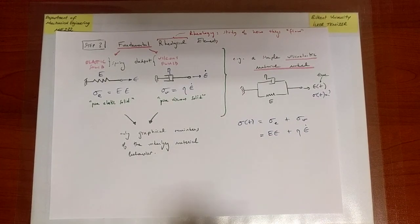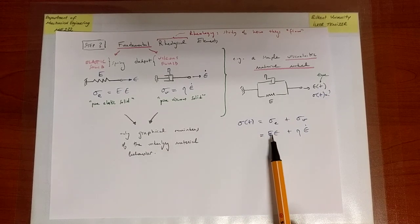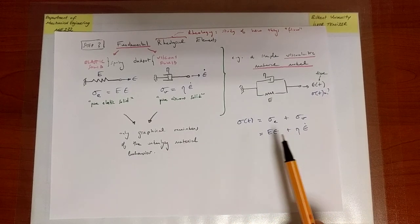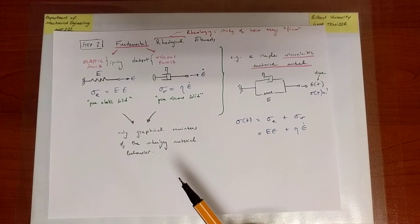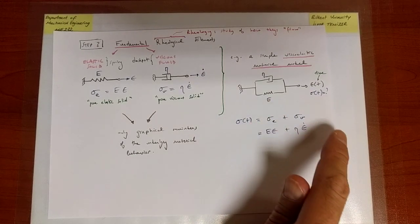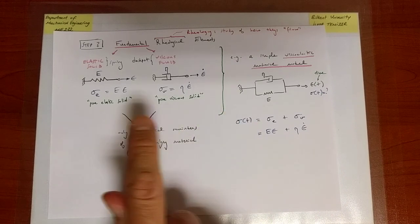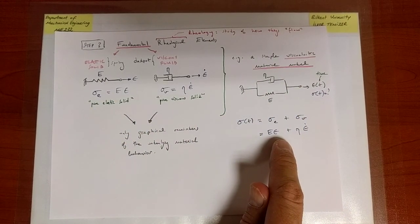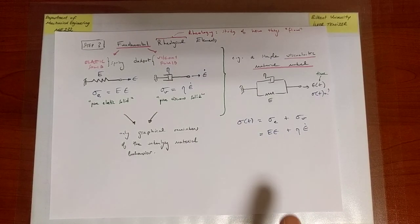Why is this a material model? First, we see strain, not displacement. Second, all the parameters that appear — E and eta — are material parameters; they have nothing to do with the dimensions of the structure. This type of behavior is neither purely elastic nor purely viscous — it's viscoelastic, and it applies to any structural scenario in which this material is used.